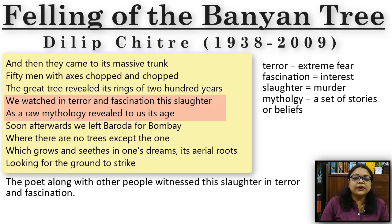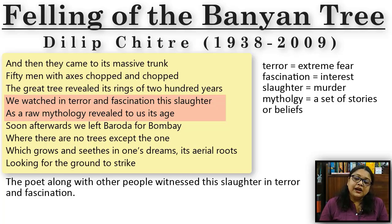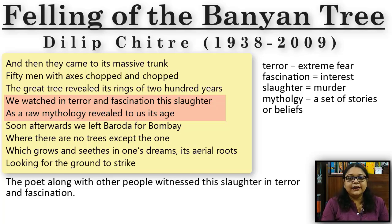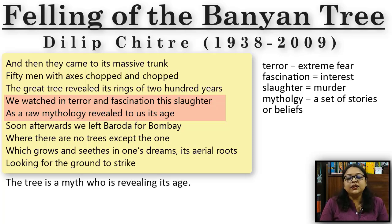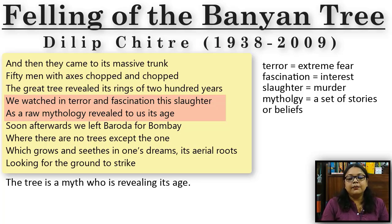He calls the cutting a 'slaughter' — a word used when you kill an animal. This tree appeared to be as sensitive as any animal that can scream in pain, though a tree cannot respond or show its pain. He still calls it a slaughter. 'As a raw mythology revealed to us its age.' He uses the word mythology because trees, especially banyan trees, are associated with Hindu mythology. When you cut down a banyan tree, you are somehow hitting that mythology and destroying the wonder associated with such trees.